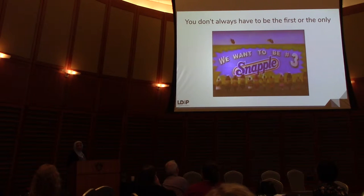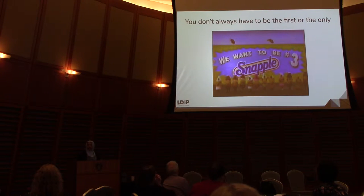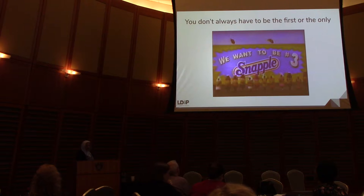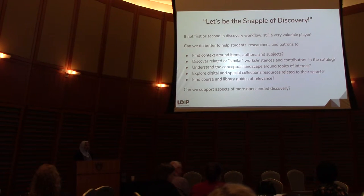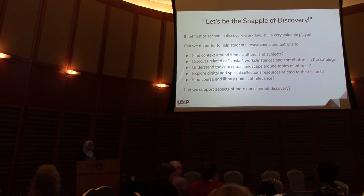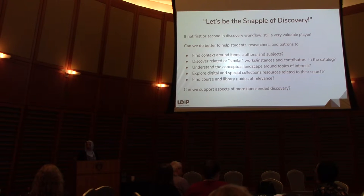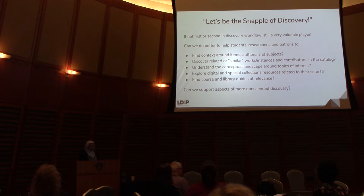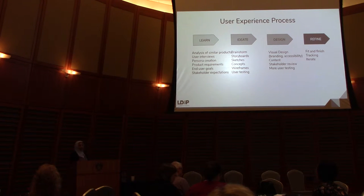In 1996, Snapple had an ad where they said they were not competing with number one and number two colas — they were not going to be first or second. This actually gives us the flexibility to figure out what flavors we'd like to offer. We can be number three, and that's fine, as long as we can understand how to support our users and be a valuable player. The tasks and questions we're looking at are issues around context, providing information around similar works and instances, what keywords and topics people can search by, and how we can connect these back to our own digital and special collections in better ways — supporting more open-ended discovery using data and bringing in external data from other sources.